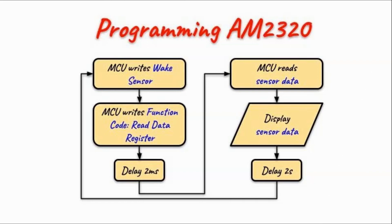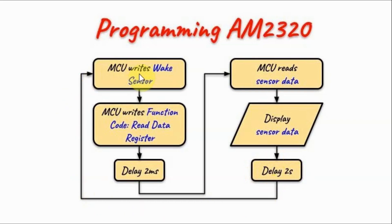This is a flowchart for programming the AM2320 using the I2C protocol. The sensor is initially in sleep mode to conserve power and alleviate noise from measurements, so we need to wake it up. The microcontroller writes the wake sensor command, then writes the function code to read data from the data register. After a delay of 2 milliseconds, the microcontroller reads the sensor data sent over the I2C bus, displays it, applies a delay of 2 seconds, and then wakes the sensor again for another measurement.